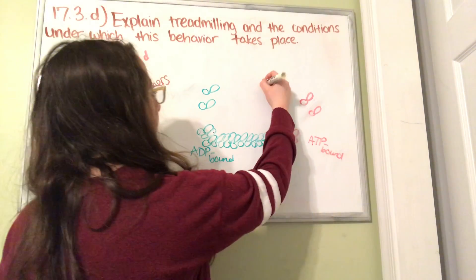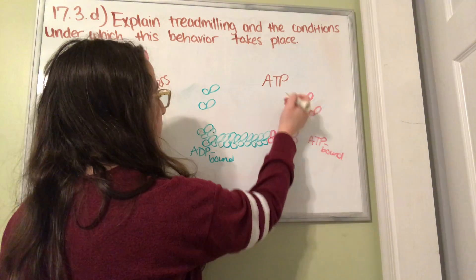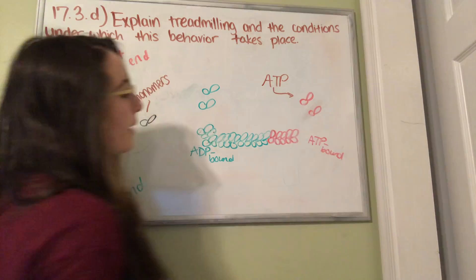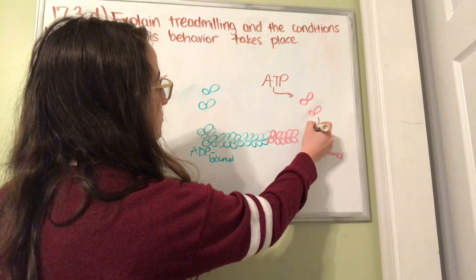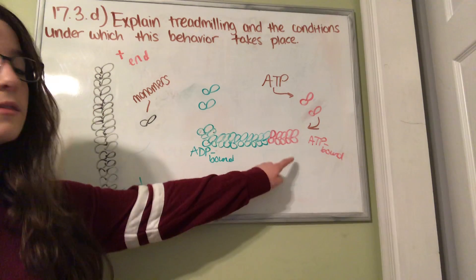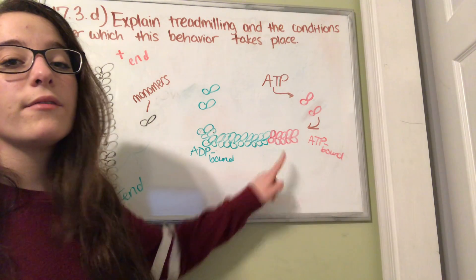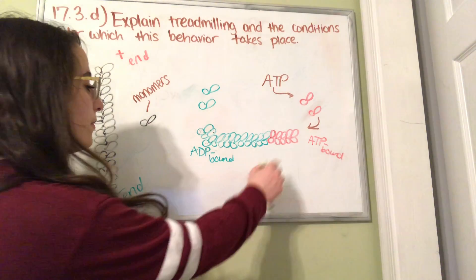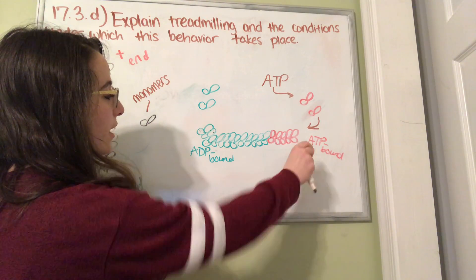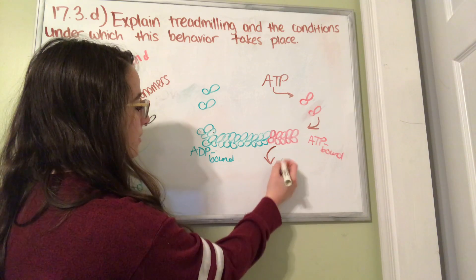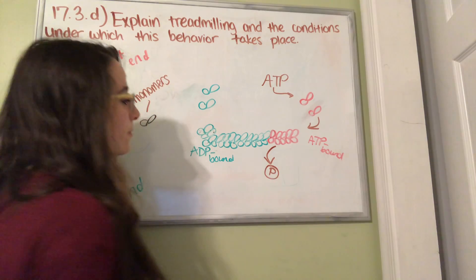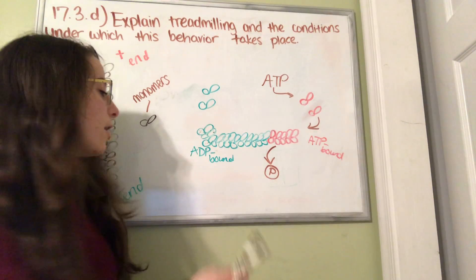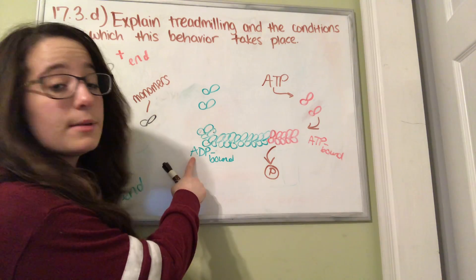An ATP comes in and binds to the monomers. They're added onto this plus end of the filament. Once they're added, the ATP is hydrolyzed, which takes a phosphate group off of it, causing it to then become an ADP-bound monomer.